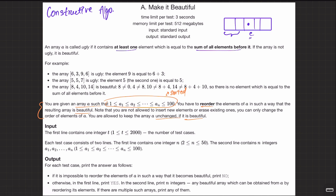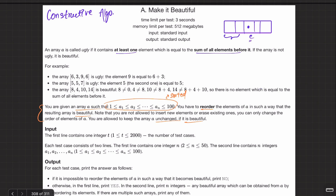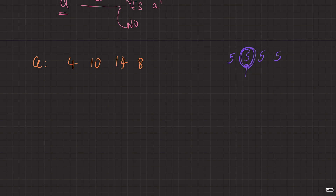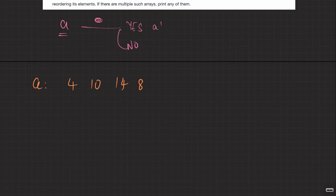Let's think about when we are definitely sure the array can never be beautiful. What if all elements are equal — say 5, 5, 5, 5? You can never reorder it to make it beautiful, because the second element will always equal the sum of all elements before it, making the array ugly. So if all elements are equal, the answer is definitely no.